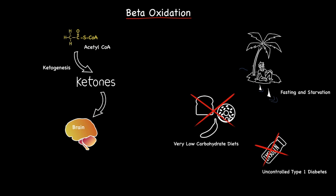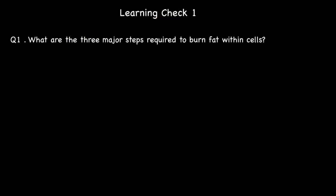Let's move on now to some questions to help you bring this all together. In total there will be four learning checks. Learning check number one: what are the three major steps required to burn fat within cells? Pause the video, and once you're ready, come back for the answers.